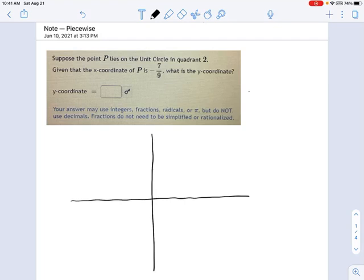Suppose the point P lies on the unit circle in quadrant 2, and then we're told, here's the x coordinate, negative 7 ninths, what's the y coordinate?